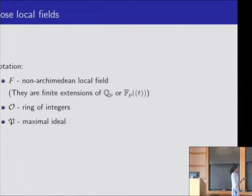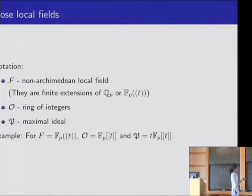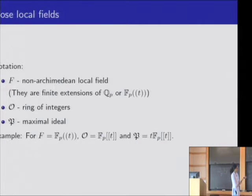O is the ring of integers and P is the maximal ideal. An example: for the Laurent series in one variable, the ring of integers is the formal power series and the prime ideal is generated by the indeterminate T.